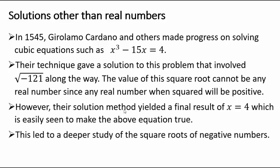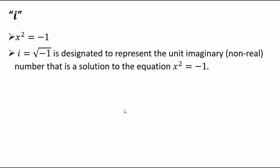To understand square roots of negative numbers, we need to go deeper. The convention is that we use the letter i (engineers use the letter j, but they mean the same thing). A simple way to understand it: look at x² = -1. No real number squared gives a negative, so we say i is the solution — i = √(-1) — designated as a unit imaginary or non-real number.